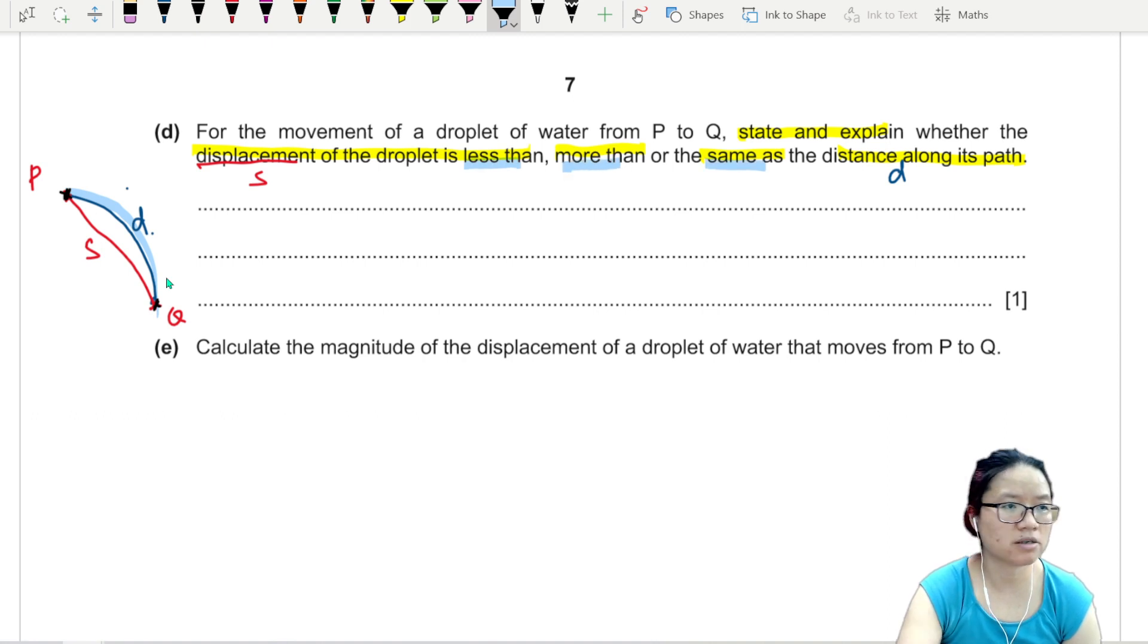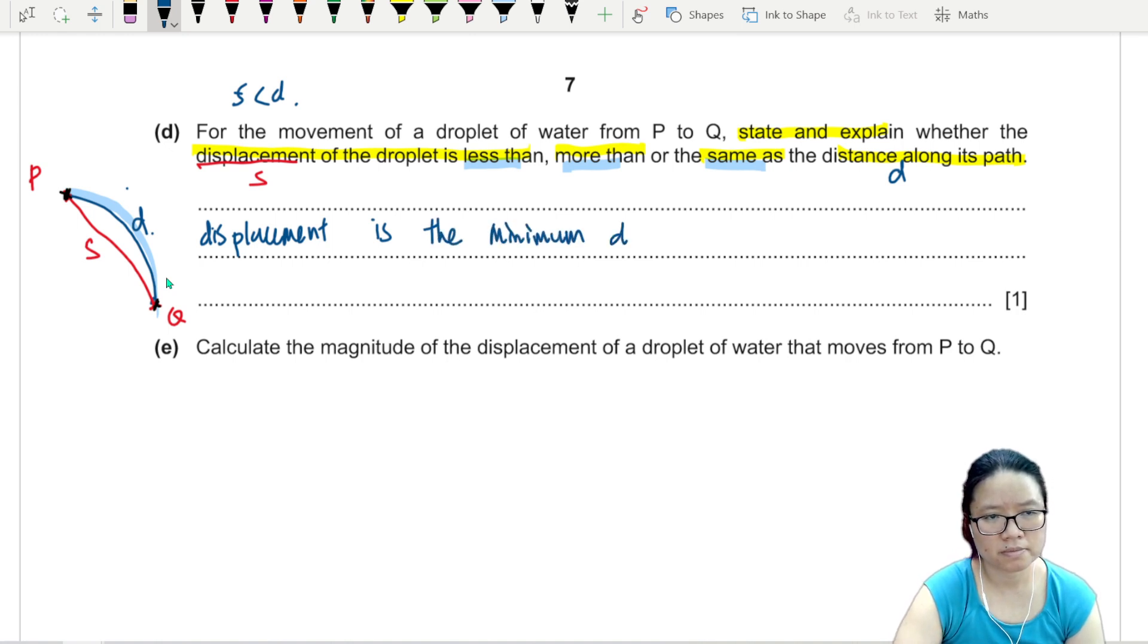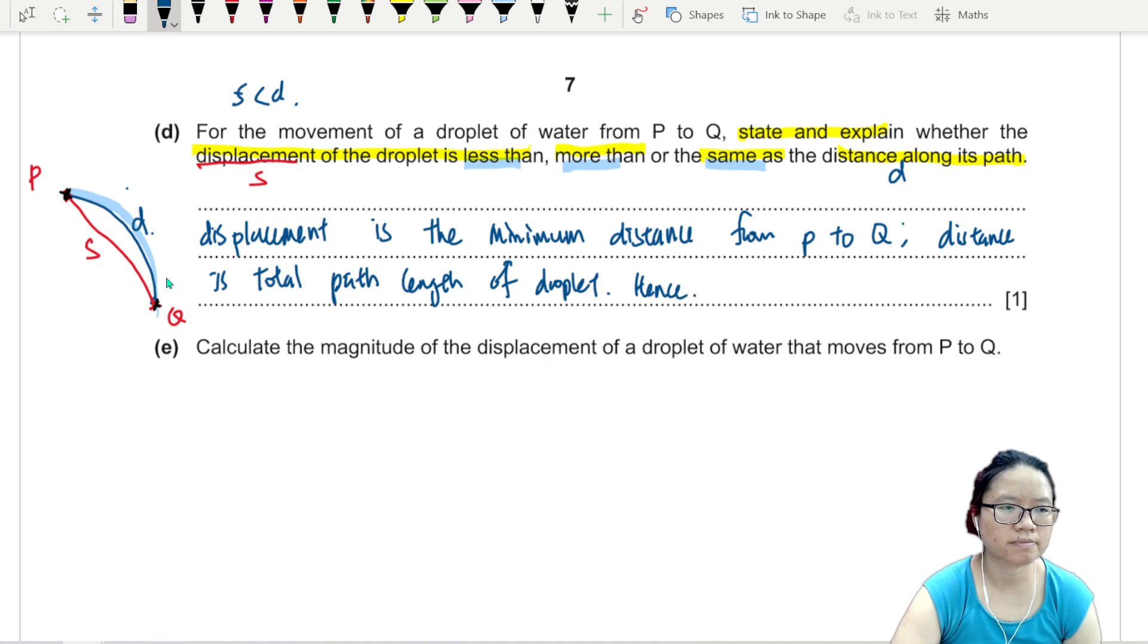So they say less than, more than, or same as, so obviously the displacement S is less than D. So I can say displacement is the minimum distance from P to Q, but distance is the total path length of the droplets. Hence, minimum distance displacement is less than distance along the path.